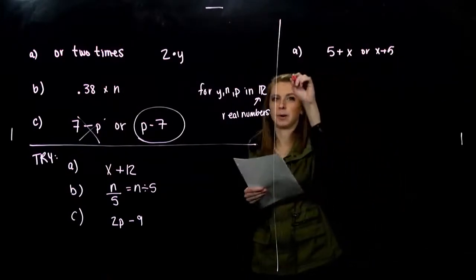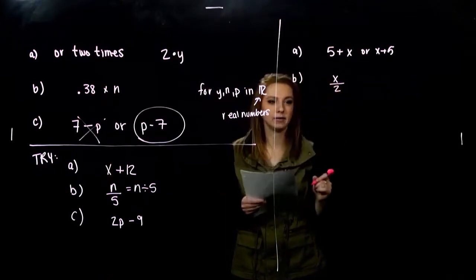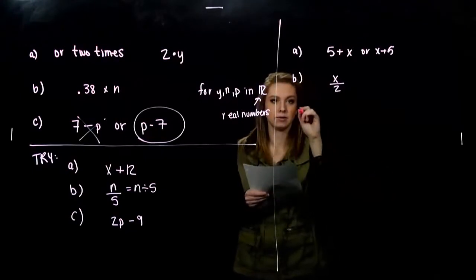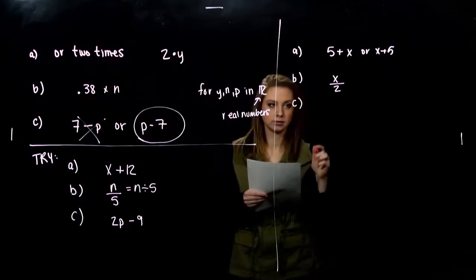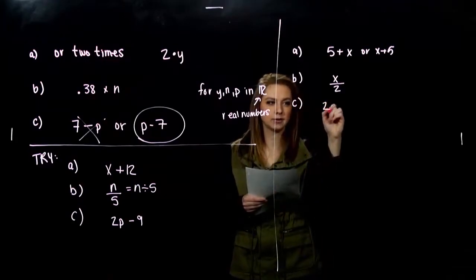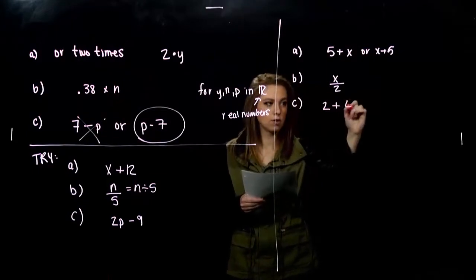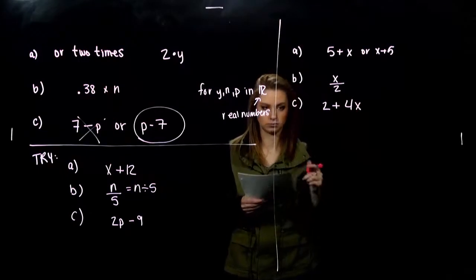Half of a number. So if I take x and I half it. I have half of x. Or you could write x times a half. That's also equivalent. What about c? Two more. So I'm just going to parse it down in little bits. Two more than four times some number.